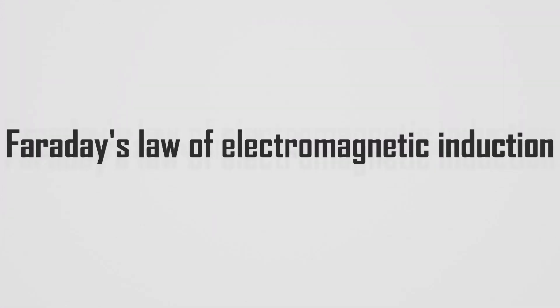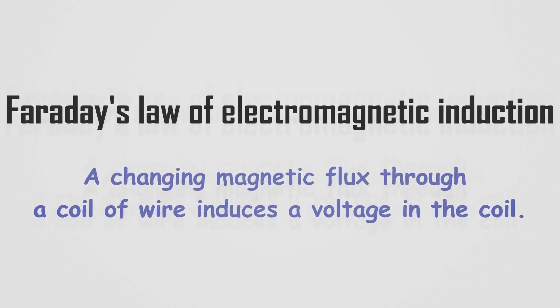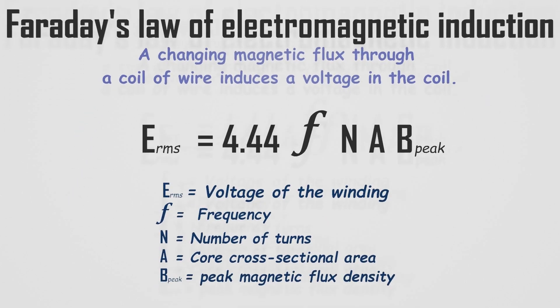The concept of Faraday's law of electromagnetic induction states that a changing magnetic flux through a coil of wire induces a voltage in the coil. For a transformer, the root mean square of induced voltage at a winding can be calculated using the supply frequency, number of turns, core cross-sectional area, and peak magnetic flux density.